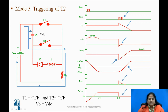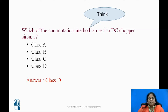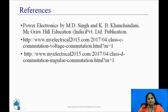This type of commutation method is used in the Jones DC chopper circuit. With this discussion on class C and class D type commutation methods, pause the video, think and answer: which commutation method is used in DC chopper circuits? The options are class A, class B, class C, or class D. The answer is class D. These are the references you can refer to. Thank you.